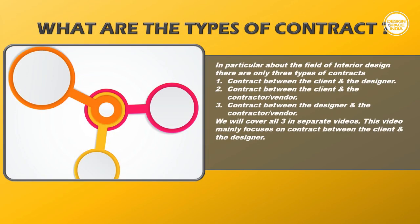What are the types of contracts? In the field of interior design, there are only three types: one, contract between the client and the designer; two, contract between the client and the contractor or vendor; three, contract between the designer and the contractor or vendor. We will cover all three in separate videos. This video mainly focuses on the contract between the client and the designer.